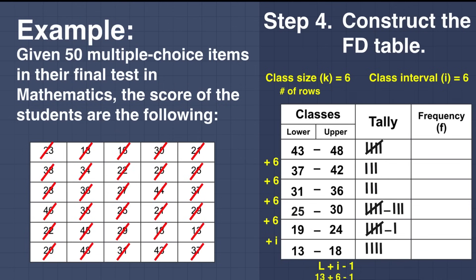The last number is 37, which is included in 37 to 42. Now we can record the frequencies for each class: class 13–18 has 4, class 19–24 has 6, class 25–30 has 3, class 31–36 has 8, class 37–42 has 6 — wait, let me recount. The final frequencies are: 5, 4, 3, 8, 6, and 4. Adding all the frequencies gives us n equals 30, the total number of respondents.